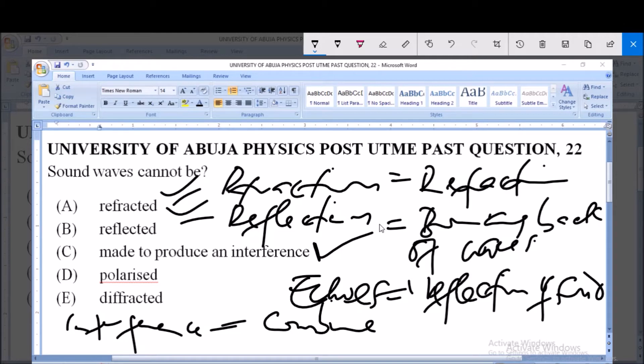Now option D says polarized. Polarization is actually a property that is peculiar to transverse waves. It's the ability of a wave to move in one plane.